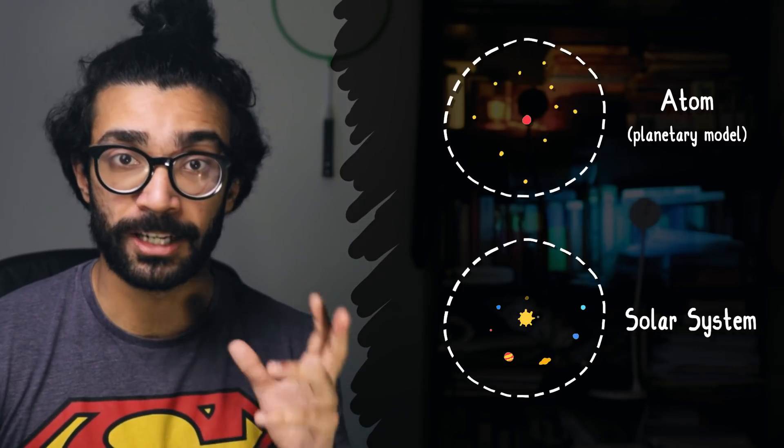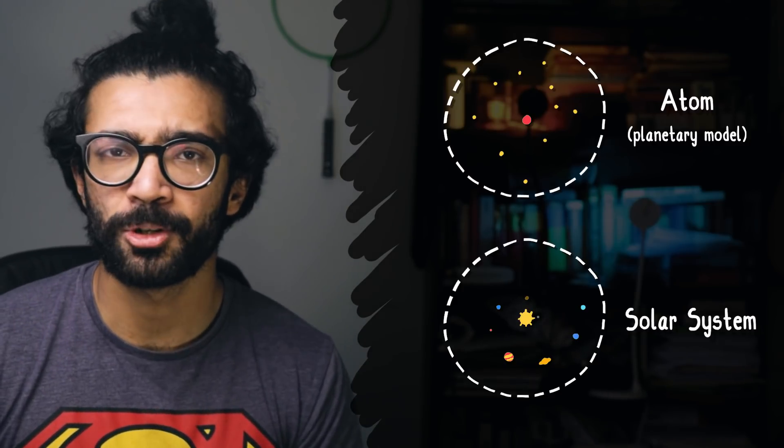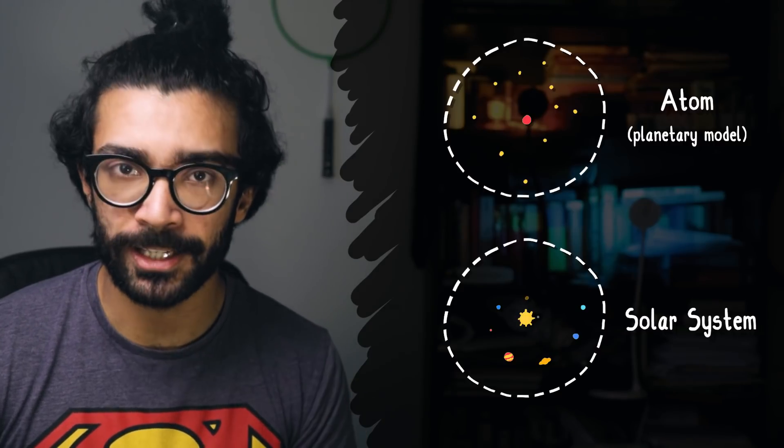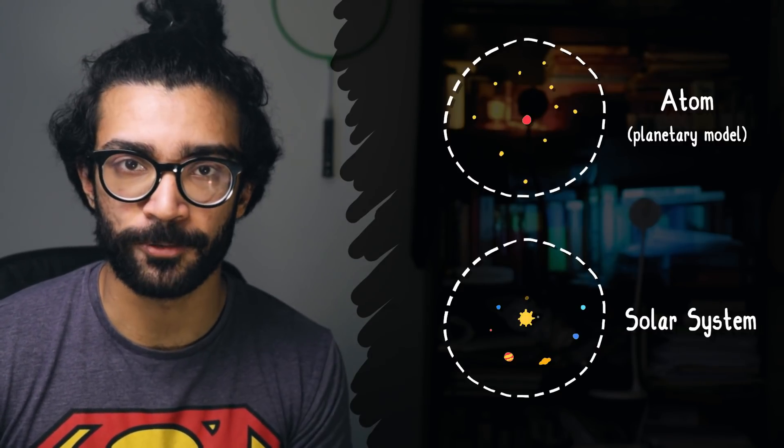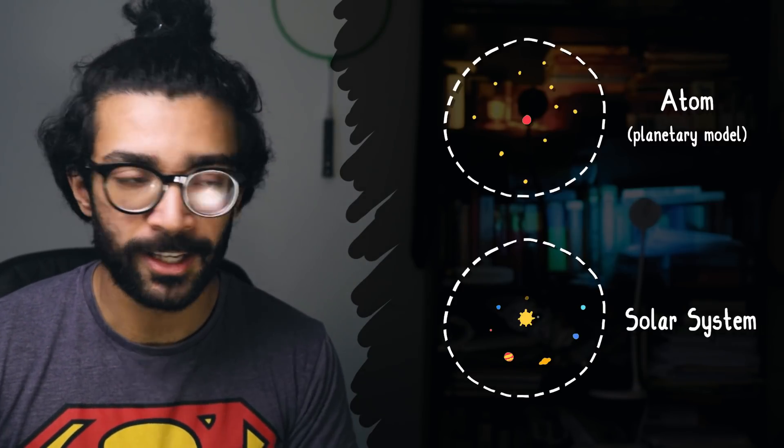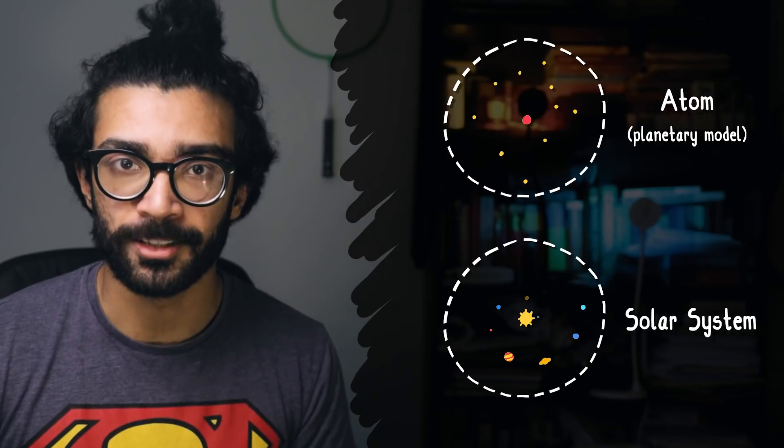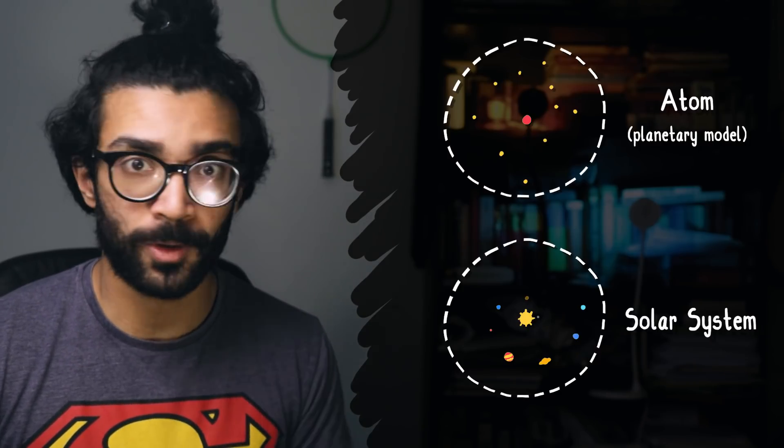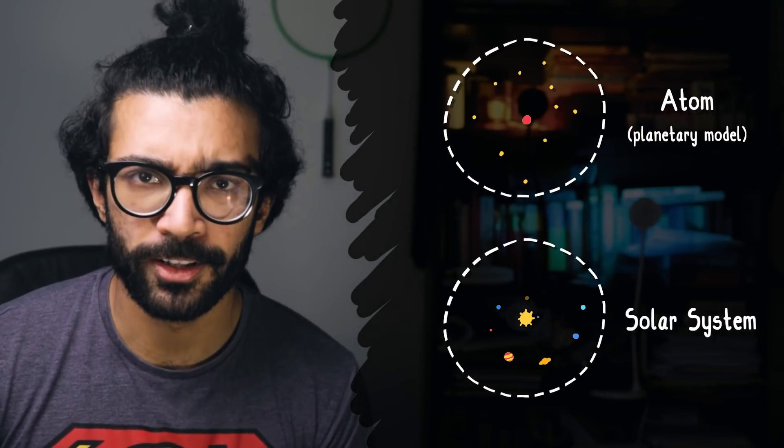Now, there are definite drawbacks to this model, as we'll see shortly. But I quickly want to talk about why this model may have been so appealing to Rutherford and to other physicists for that matter. Not only does the planetary model show some sort of similarity, some sort of harmony, between small-scale structures such as atoms and large-scale structures such as solar systems, but it actually goes a lot further than this.